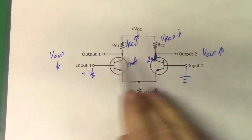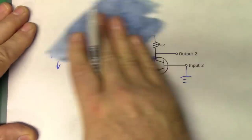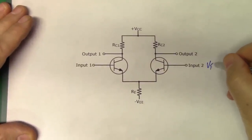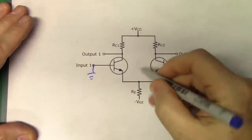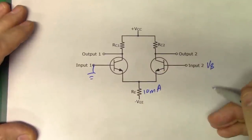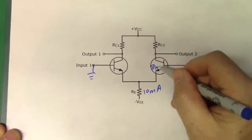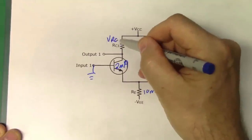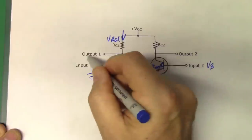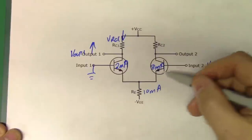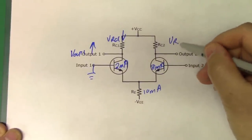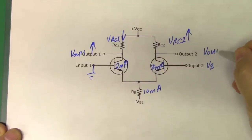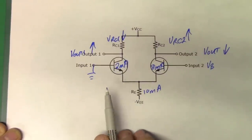The same thing would happen if I flipped these two values around. If I applied a positive voltage to input 2 while grounding input 1, with the same 10 milliamps total and 8 milliamps through transistor 2, the voltage drop on VRC1 decreases, making Vout1 go up, while VRC2 increases and Vout2 goes down. So you can see it's a relatively straightforward and simple device.